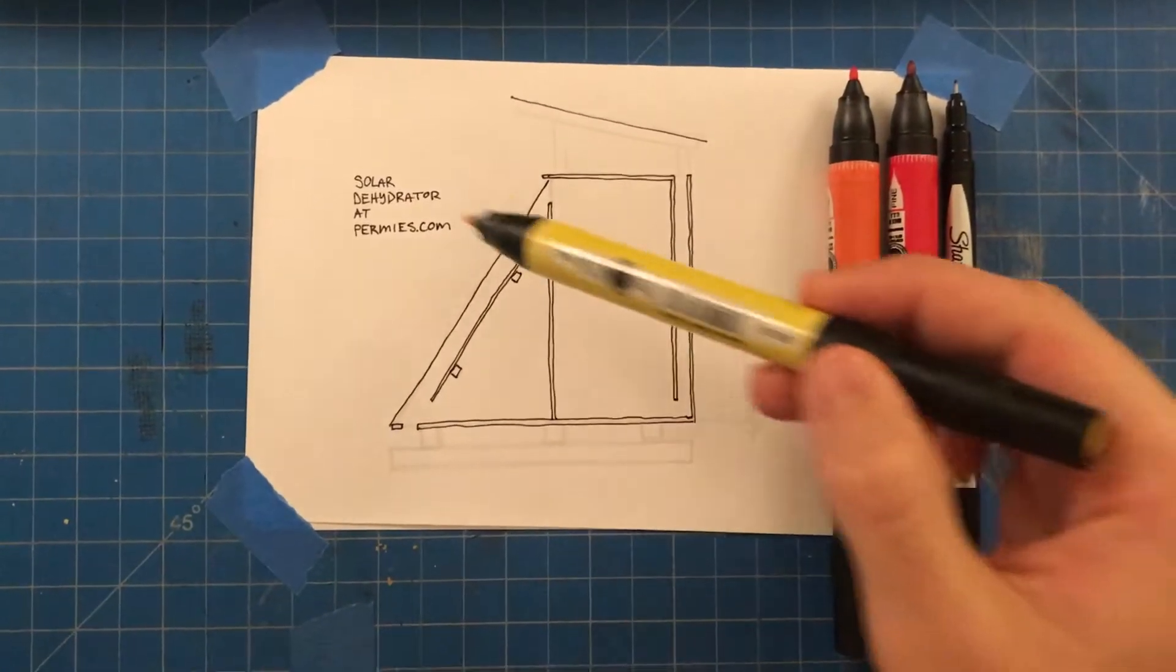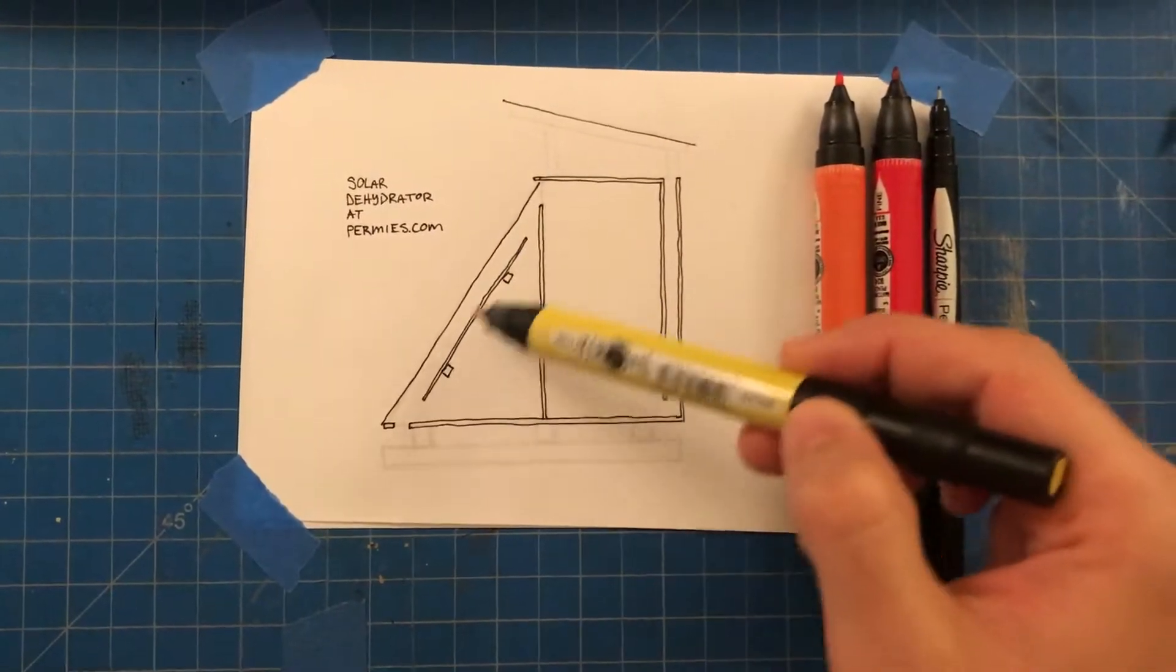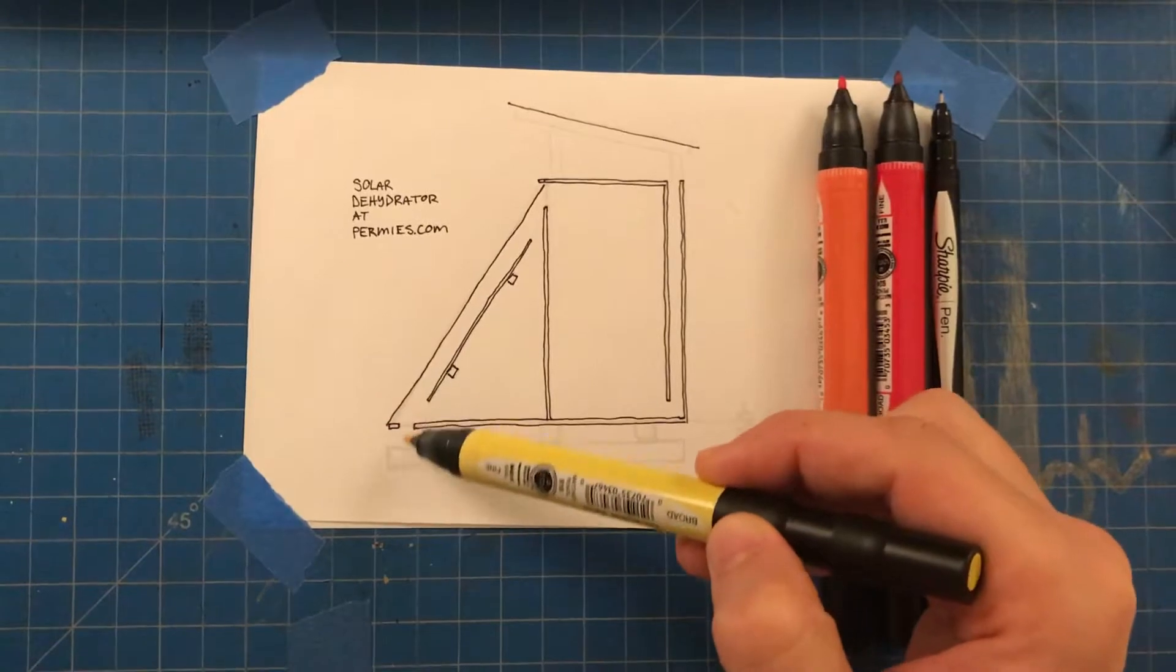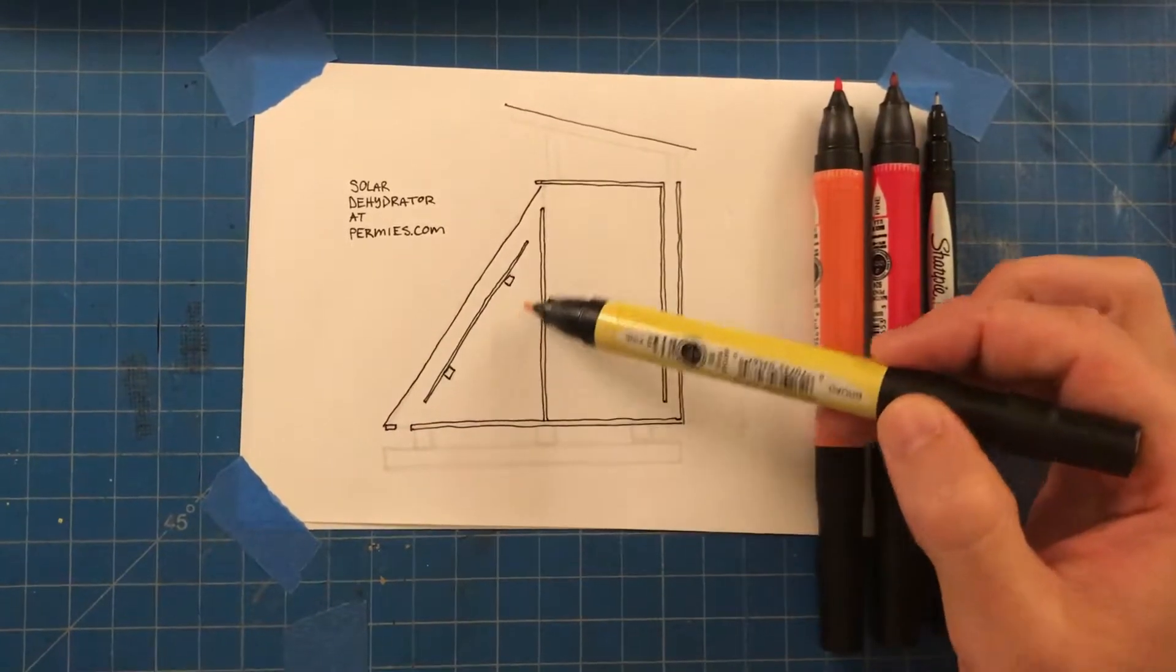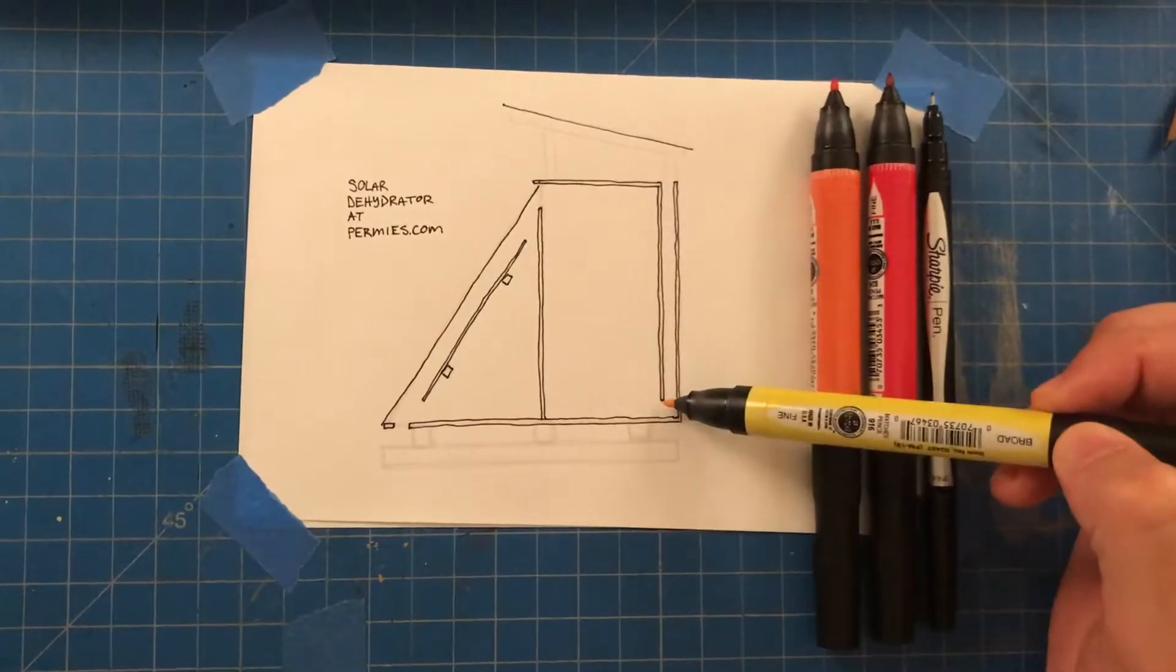So as this is facing the sun, as this air in here heats up, new air comes in and this air flows through the system like this and is released once it hits this threshold.